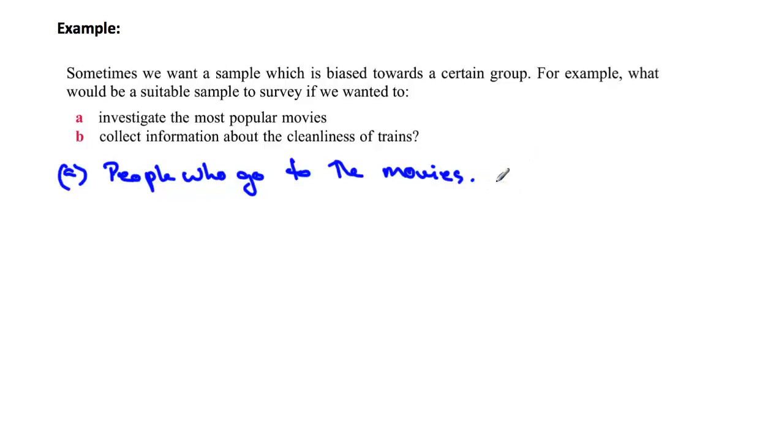So maybe people in the foyer of a movie theater. What about this one? Once again, we're looking for bias because we're really trying to get a certain group. In this case, we want to collect information about the cleanliness of trains, so clearly you would ask people who travel on trains.